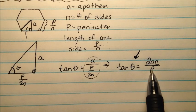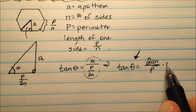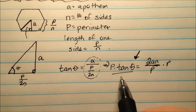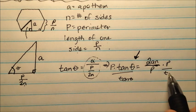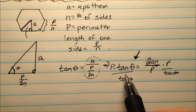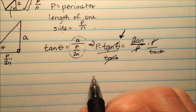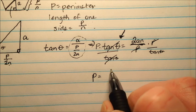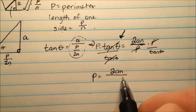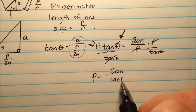So I can actually solve for P by multiplying both sides by P and then dividing both sides by tangent. So the tangents cancel, these P's cancel. And what I'm left with here is the perimeter equals 2AN over the tangent of theta.